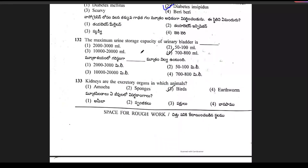Question 132: the maximum urine storage capacity of the urinary bladder is 700 to 800 milliliters. Option 4 is the right answer.